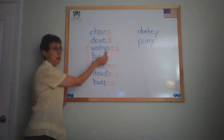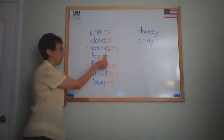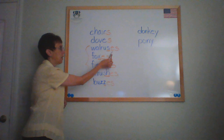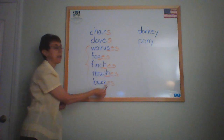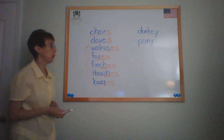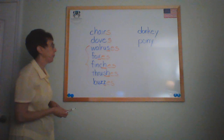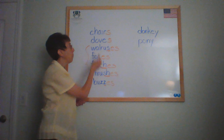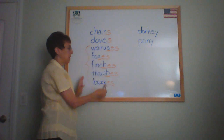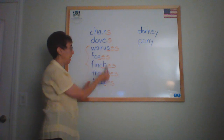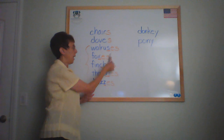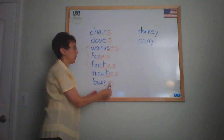So again, nouns ending in S, X, CH, SH, or Z — we would add ES to make them plural. Most nouns just add S, but words ending with any of these five endings, we add ES to it.